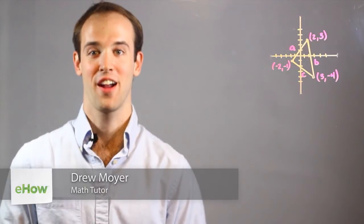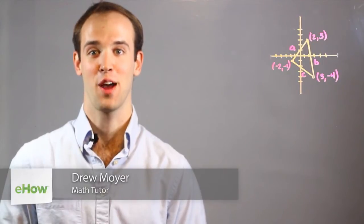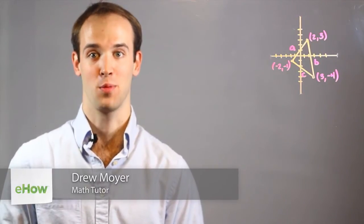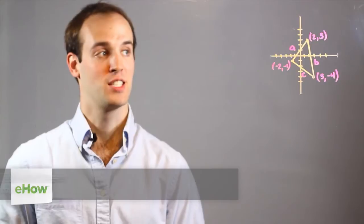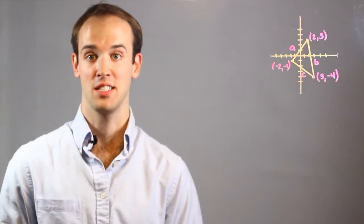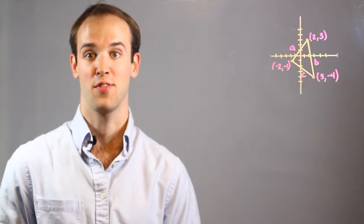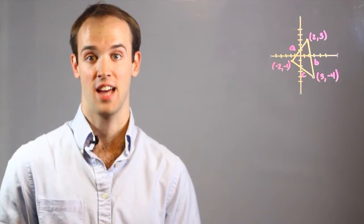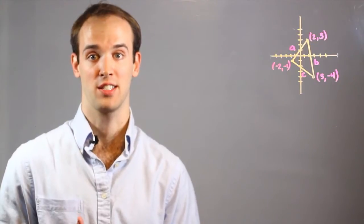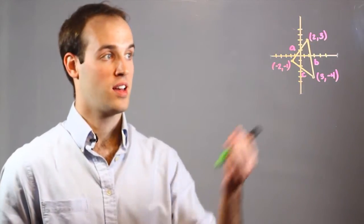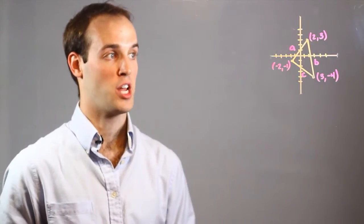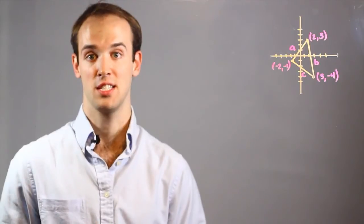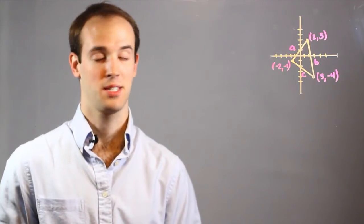Hi, I'm Drew Moyer, and this is how to find perimeter using the distance formula. To find the perimeter, we're going to need to use the distance formula to find the lengths of each of the sides of the shape that we're trying to solve for. And here we have our shape — it's a triangle — so we're going to need to use the distance formula three separate times.